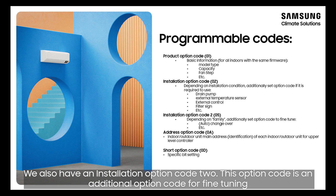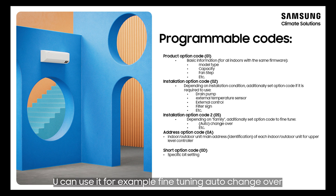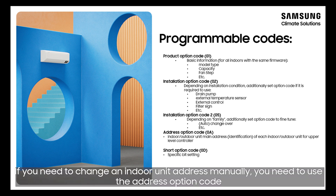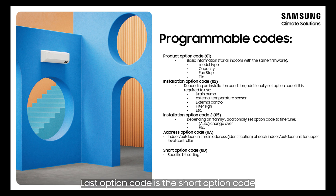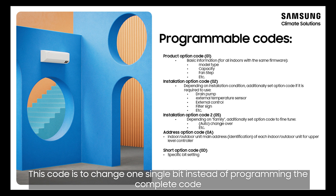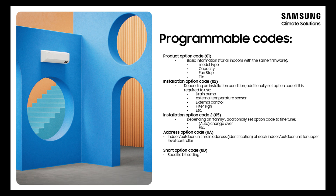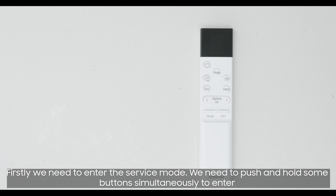We also have an installation option code 2. This option code is an additional option code for fine tuning — you can use it, for example, for fine tuning auto changeover. If you need to change an indoor unit address manually, you need to use the address option code. You can change indoor and outdoor unit address for upper level controller. The last option code is the short option code — this code is used to change one single bit instead of programming the complete code.